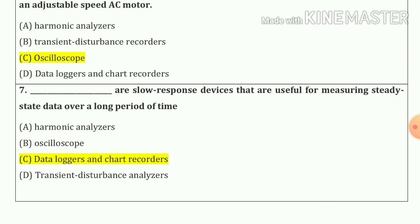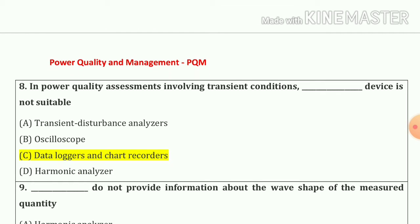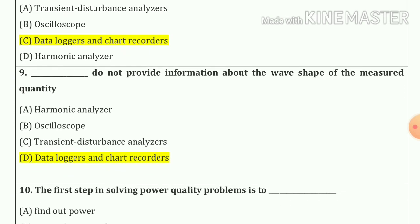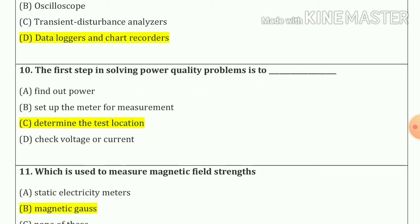Question number seven: data loggers and chart recorders are slow response devices that are used for measuring steady state data over a long period of time. Question number eight: in power quality assessments involving transient conditions, blank device is not suitable. In power quality assessments involving transient conditions, data loggers and chart recorders devices are not suitable.